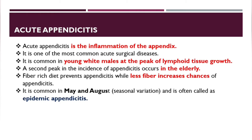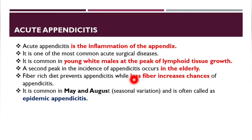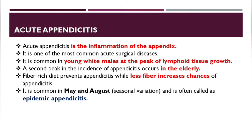Acute appendicitis is common in young white males at the peak of lymphoid tissue growth, with a second peak in incidence occurring in the elderly. A fiber-rich diet prevents appendicitis, while lesser fiber increases the chance. It is more common in May and August — a seasonal variation sometimes called epidemic appendicitis.